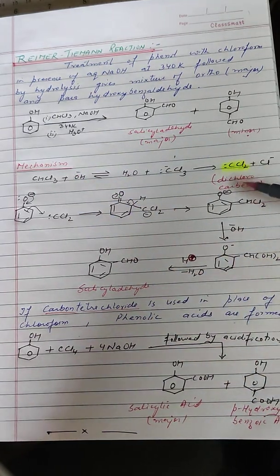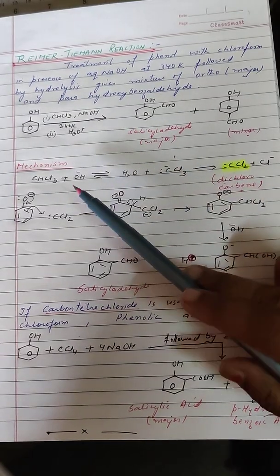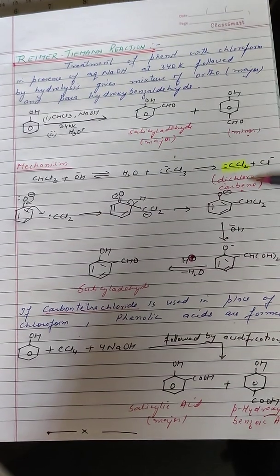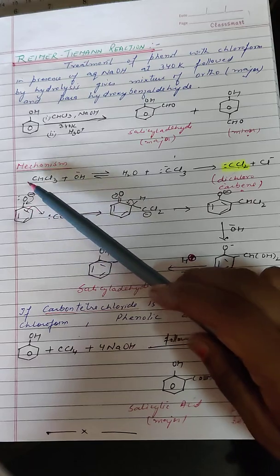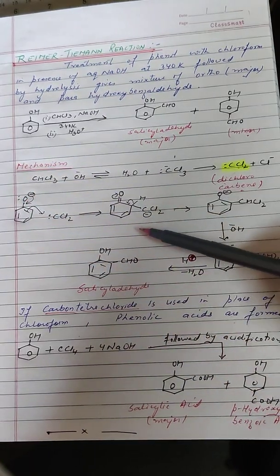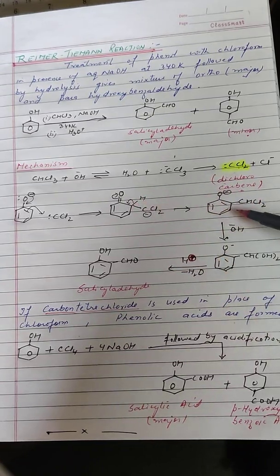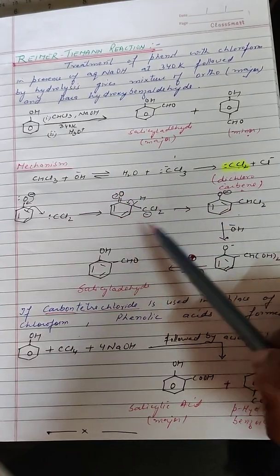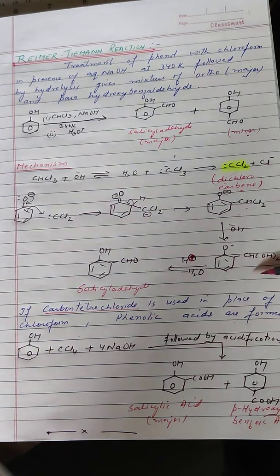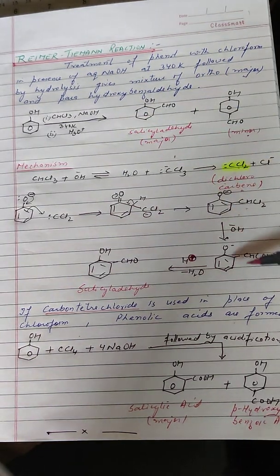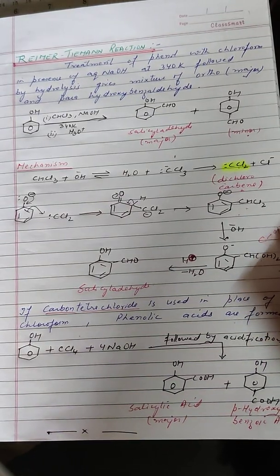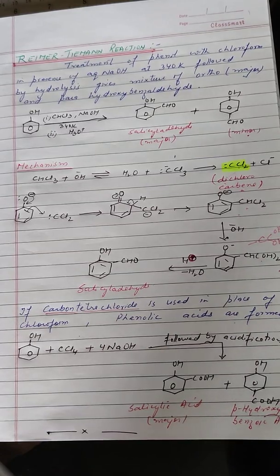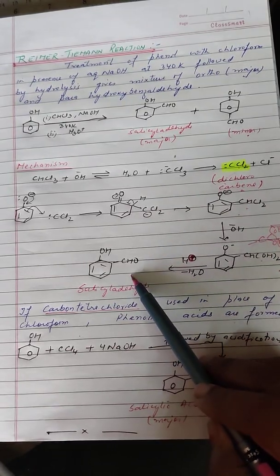The mechanism is believed to occur via a carbene — specifically dichlorocarbene. Chloroform reacts with sodium hydroxide to give dichlorocarbene, which is then attacked at the ortho position by the sodium phenoxide ion. To attain aromaticity, keto-enol tautomerism gives a dichloro compound, which on hydrolysis with base (OH⁻) gives a gem-dihydroxy compound. Since gem-dihydroxy groups — two OH groups on the same carbon — are very unstable, they immediately lose one water molecule to give the aldehyde.